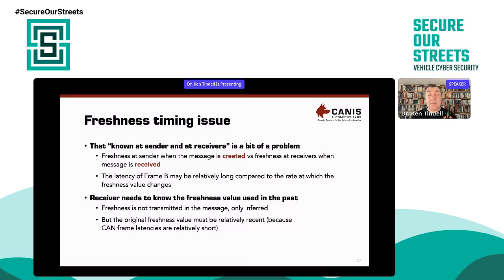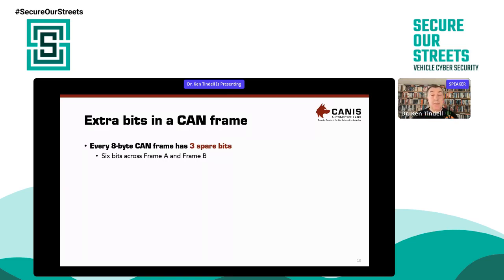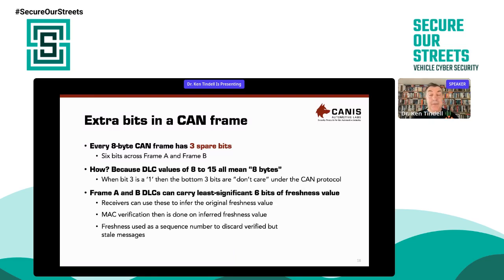The original freshness value must be relatively recent because CAN frame latencies aren't long. The solution is to use spare bits inside the CAN frame. Every eight-byte CAN frame has three spare out-of-band data bits in the DLC field (DLC values 8–15 all mean eight bytes), giving six bits across frames A and B. Frames A and B carry the least significant bits of the freshness value. Receivers can work out the original freshness value from their current freshness value and those six bits, then verify using the inferred freshness value. Verified but already-seen values are stale messages and are rejected.